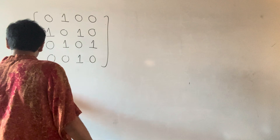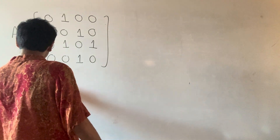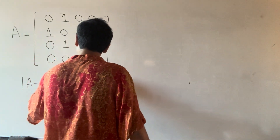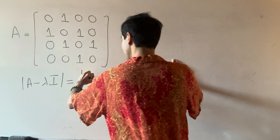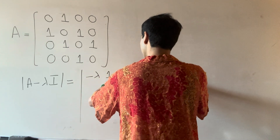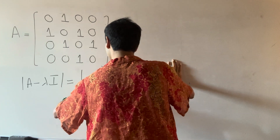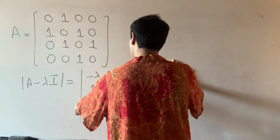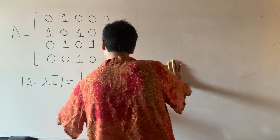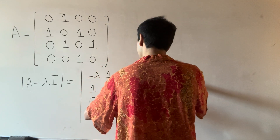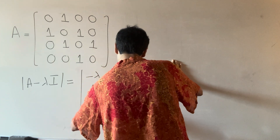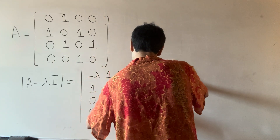Let's do it. So determinant of A minus lambda I, which is determinant of the matrix: minus lambda, one, zero, zero; one, minus lambda, one, zero; zero, one, minus lambda, one; zero, zero, one, minus lambda.